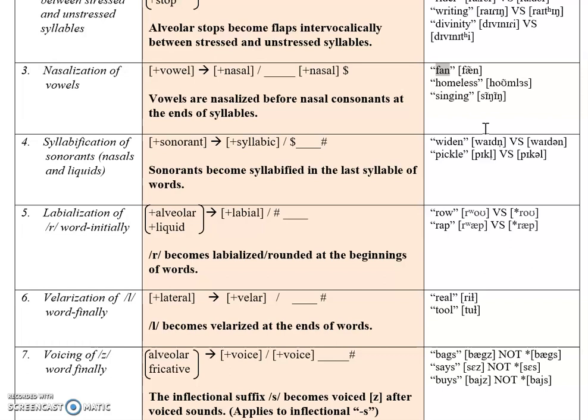When you pronounce the /n/, just before you do it you're opening up the nasal passage — you're moving your velum. When you do that just before pronouncing the nasal, it becomes what we call anticipatory: you anticipate the /n/, and above the 'a' vowel you can see the tilde which indicates nasalization. So in 'fan,' when you get to the /n/, the vowel already starts to become nasalized. The same happens in 'homeless' and in 'singing' — vowels are nasalized before nasal consonants at the ends of syllables.